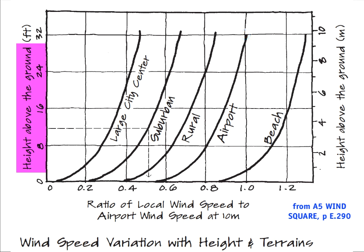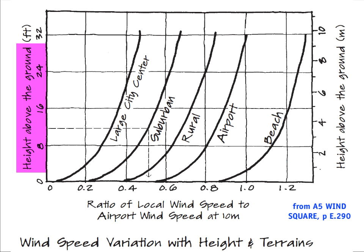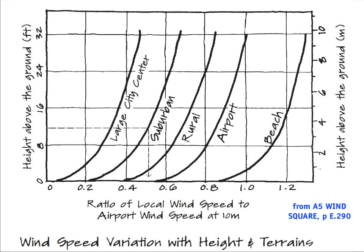Height above ground also makes a significant impact. A one-story building with windows around 4 feet up will have much less wind speed than at 10 meters above ground. Pick your location based on site context — small city can use suburban, large city center with high-rise buildings uses the large city center category. Then find the height corresponding to the average height of your inlets and outlets. For example, at about 12 feet above ground in a suburban location, the ratio of local to airport wind speed is about 0.5.